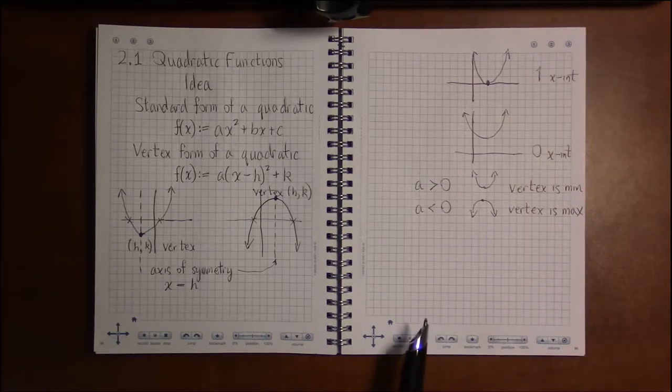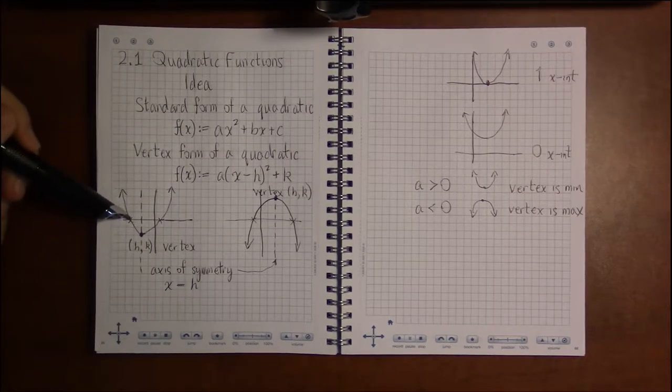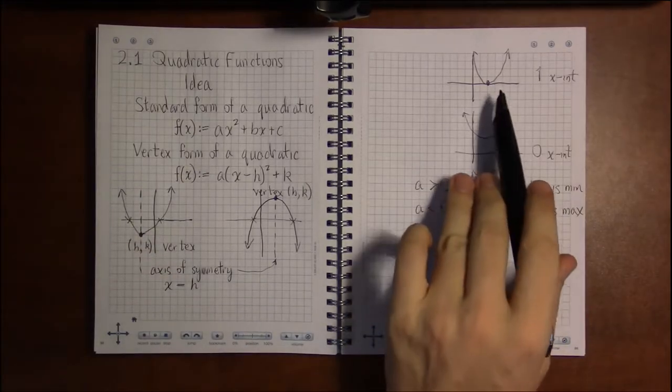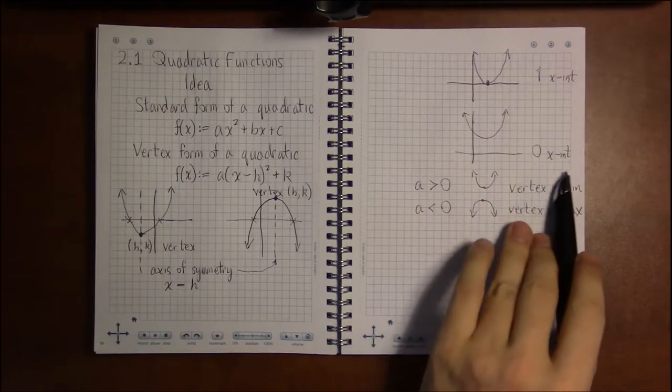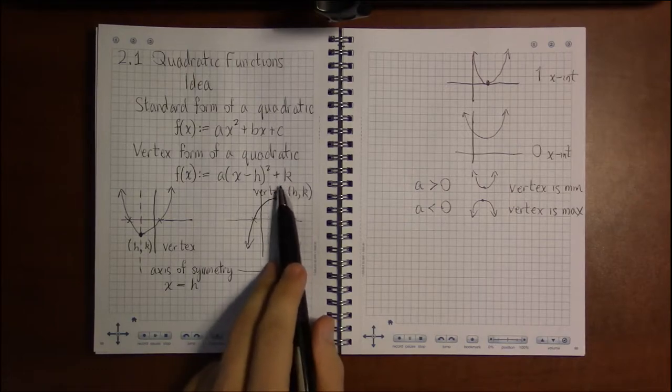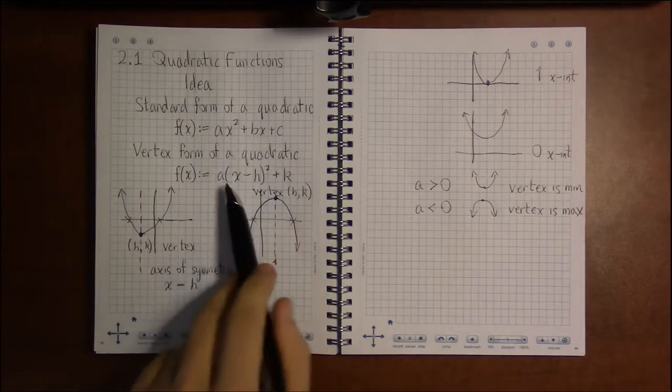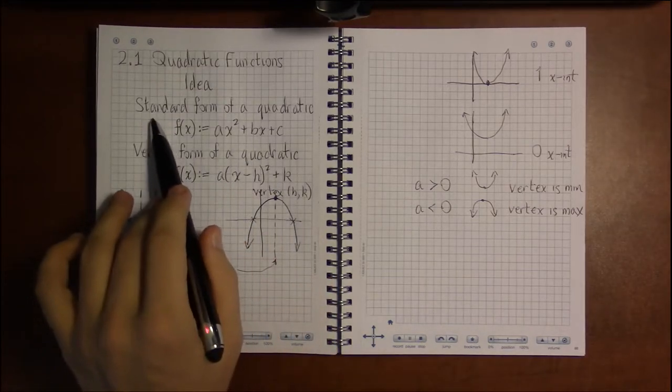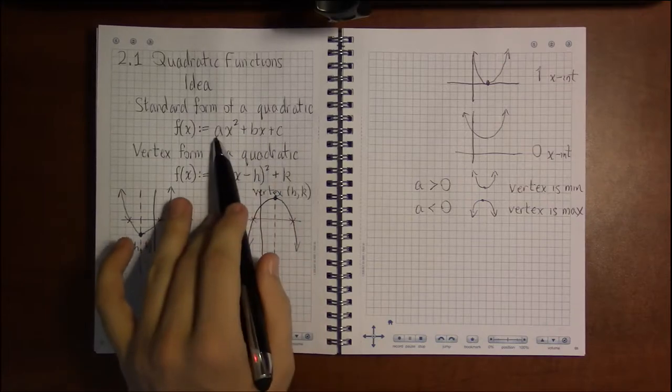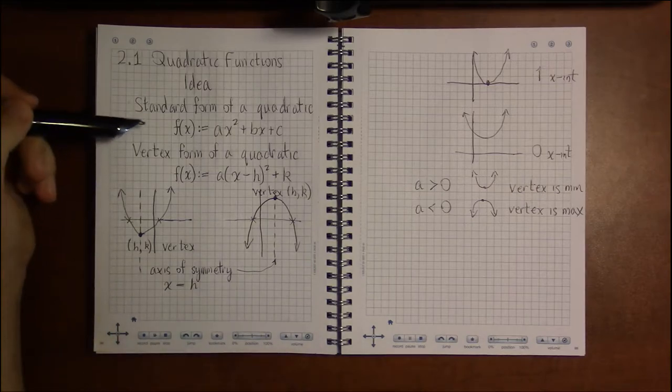Now as to whether a quadratic has two x-intercepts, one x-intercept, or no x-intercepts, that pretty much entirely depends upon k and a in the vertex form, and in a more complicated way it depends on all the coefficients in the standard form. But we'll get to that later on.